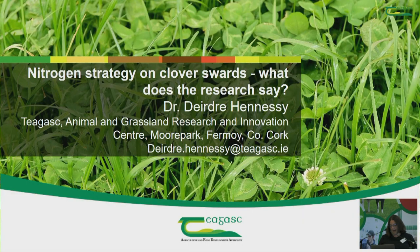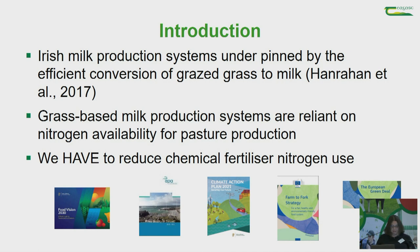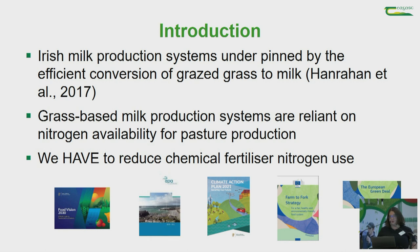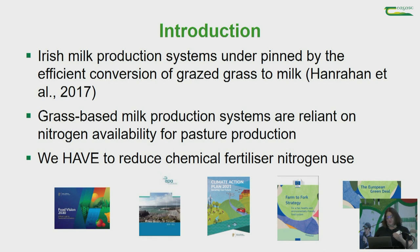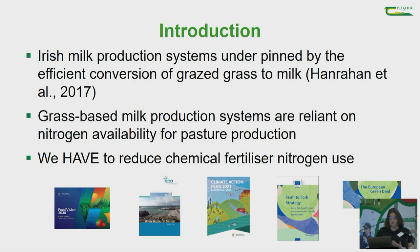Good morning everyone. Irish milk production systems are underpinned by efficient conversion of grazed grass to milk, and to grow that grass we have a reliance on nitrogen availability in the system. We now have to reduce chemical fertilizer use — the Farm to Fork strategy from the Green Deal is targeting a 20 percent reduction in chemical fertilizer use, and the Food Vision goes further to 25–30 percent reduction in chemical nitrogen fertilizer use.